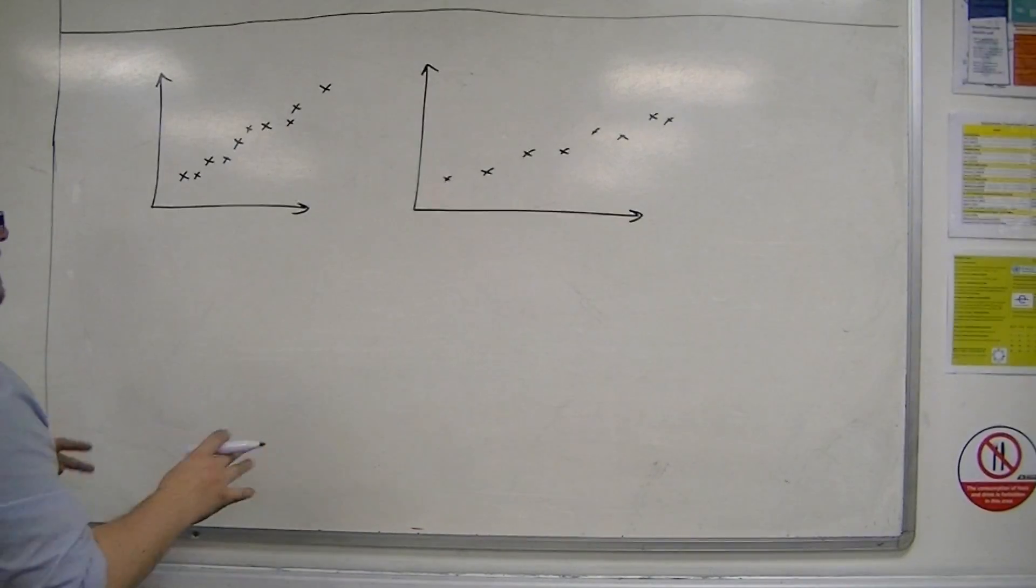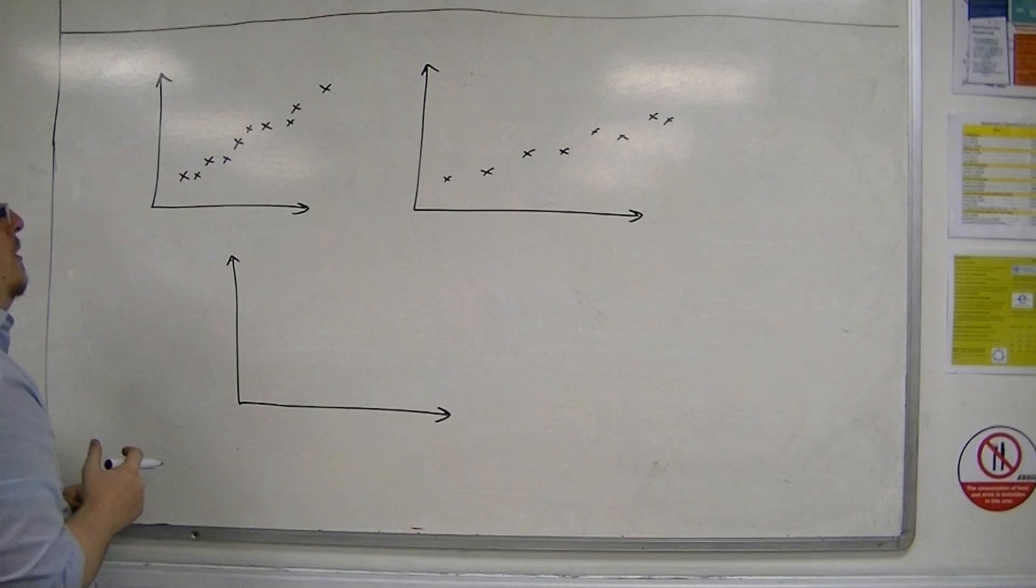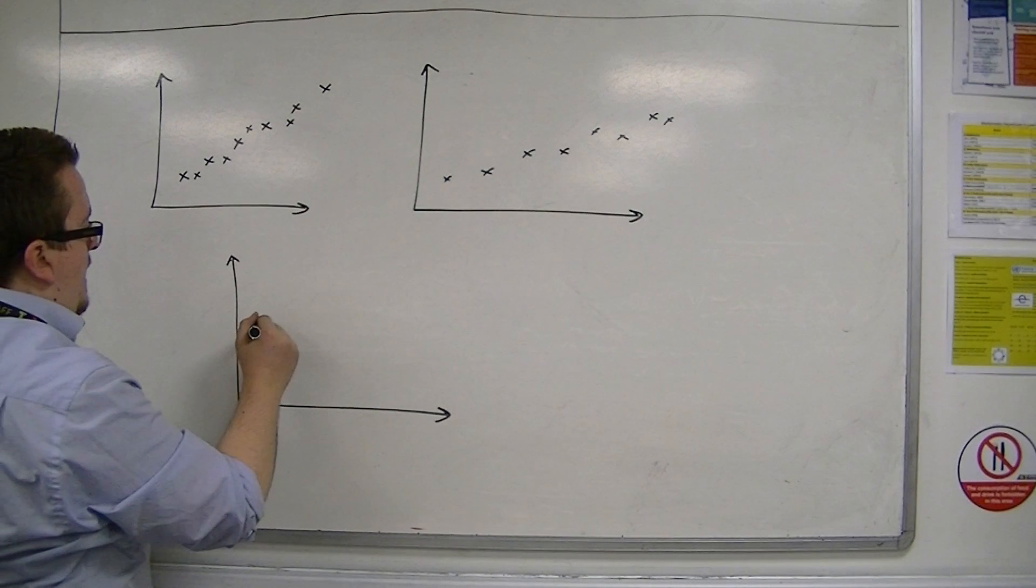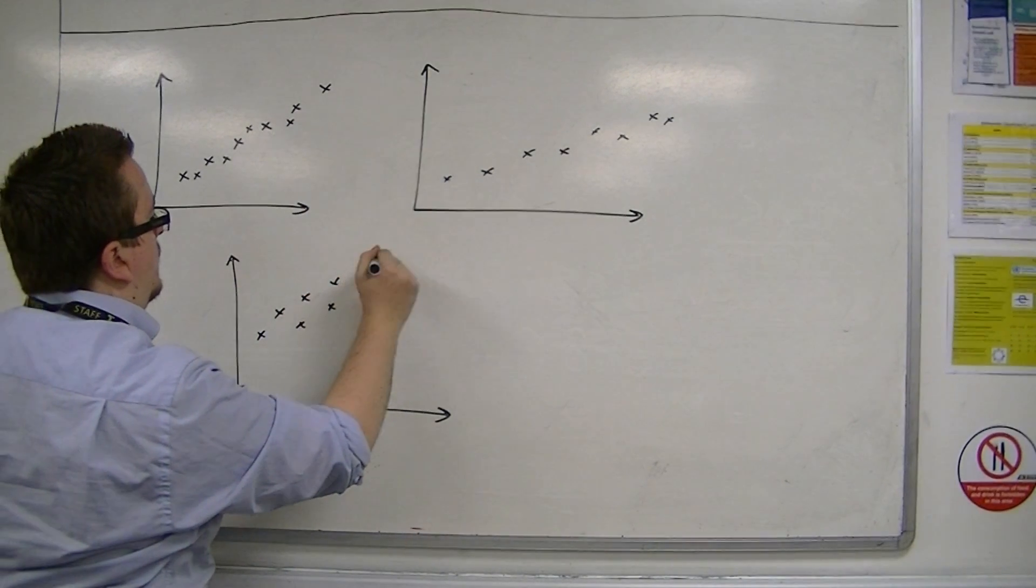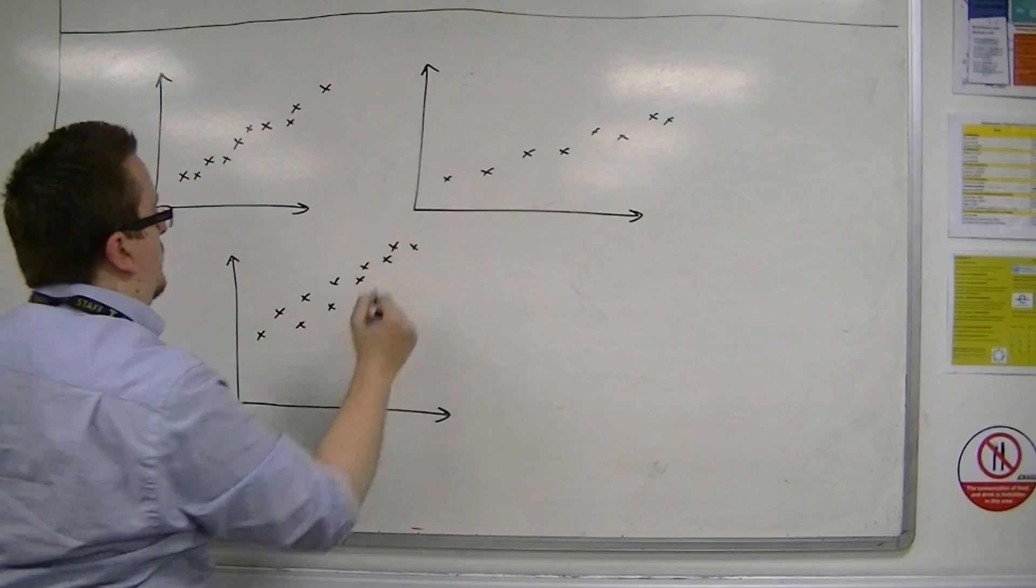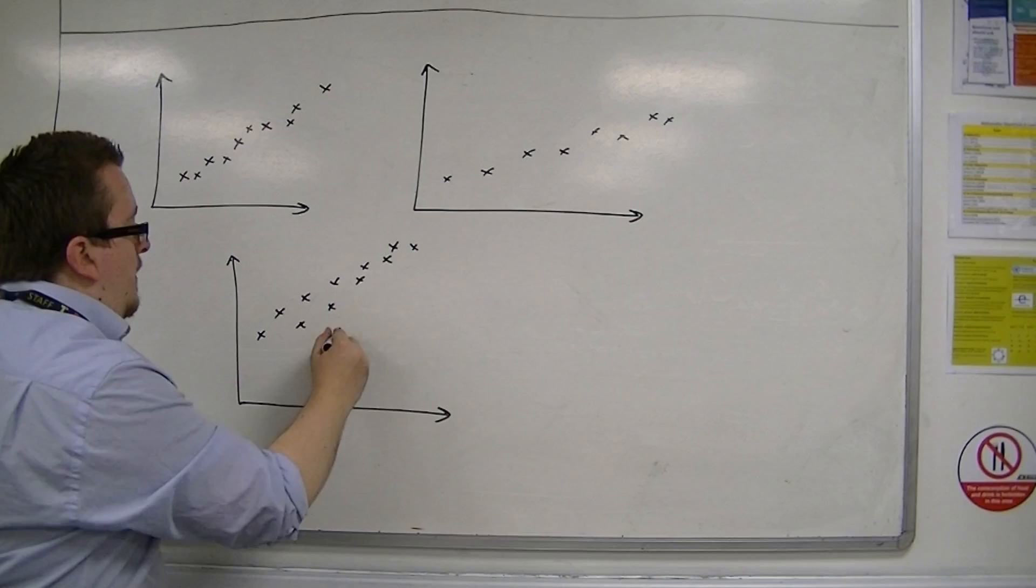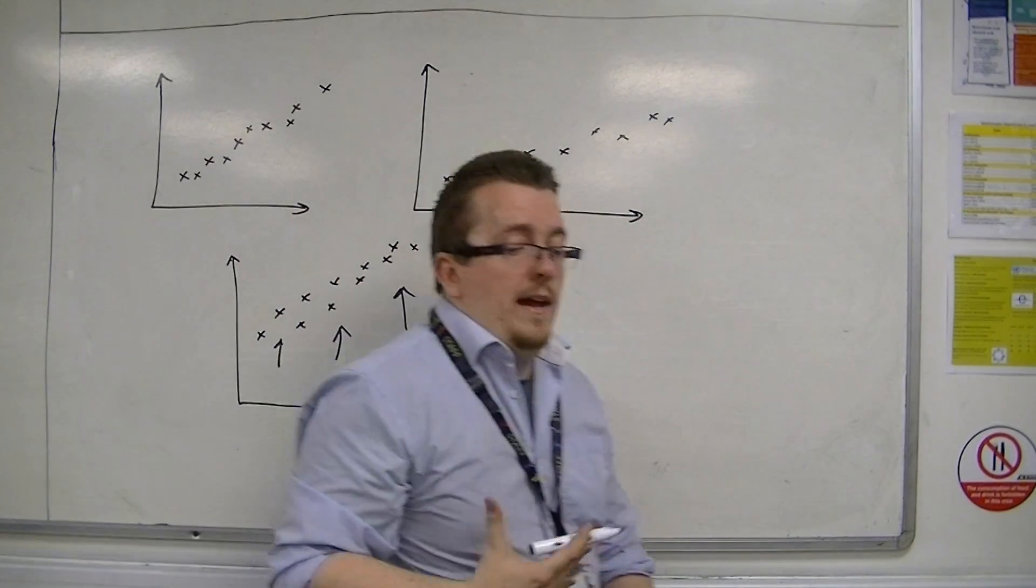You can see this also if you add a number to each of the y values. So, they were originally there and now they're up here, for example. All that's happened is that they have moved upwards. The correlation hasn't changed.